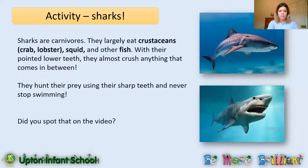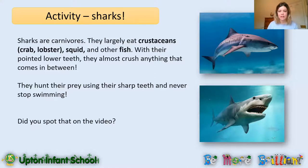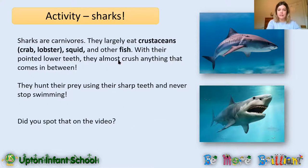So, lots of information in that video. Did you manage to spot what the shark eats and how it gets its energy source? Did you see how even when it slept, it still managed to catch its prey? Sharks are carnivores. They eat mostly crustaceans — sea creatures like crabs or lobster — squid, and also other fish. With their pointed lower teeth they can almost crush anything that comes between them. When a shark's tooth breaks off, it immediately grows back. They hunt their prey using their sharp teeth and never stop swimming. That's what makes them a carnivore — they only eat other sea creatures.